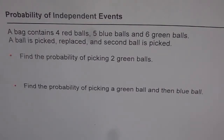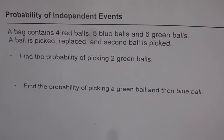In this example, there are two things happening — you are twice picking from the same bag. It is called a compound event since there are two events involved. Whenever there is more than one event, we say it is a scenario of compound events. With this video we will try to understand how to find probability when the events are independent.